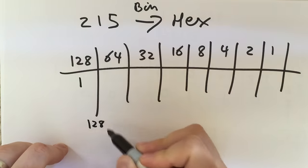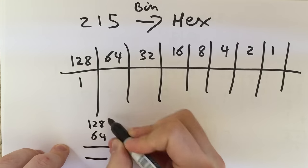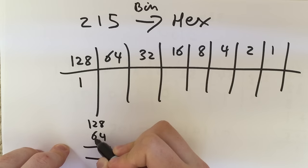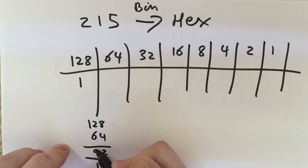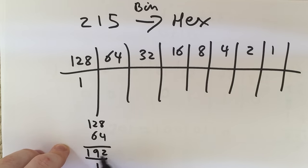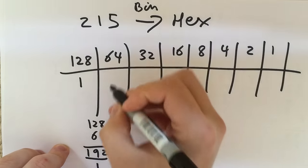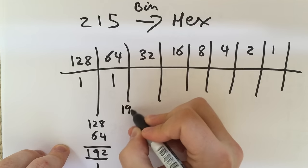Will 64 go into this? Well, if I add on 64 here, 4 add 8 is 12, 2 add 6 is 8, add the 1, 9, and the 1 on the end is 192. Yes, because 192 still isn't up to 215. Let's add that on. And now up to 192.